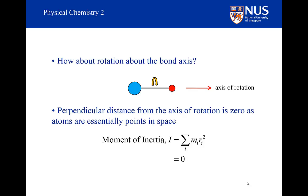In reality, of course, the nuclei do have a really small size, and of course the electrons are not on the internuclear axis. And so the diatomic does have a really small moment of inertia around the internuclear axis. But remember that the rotational term is inversely proportional to the moment of inertia.